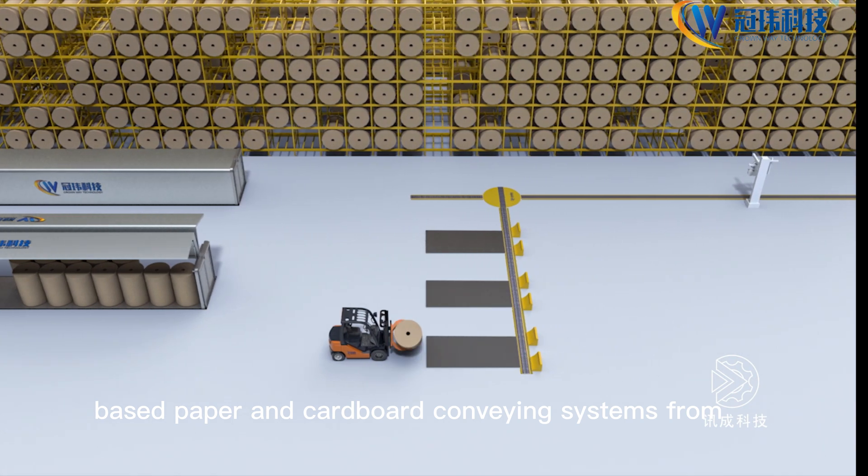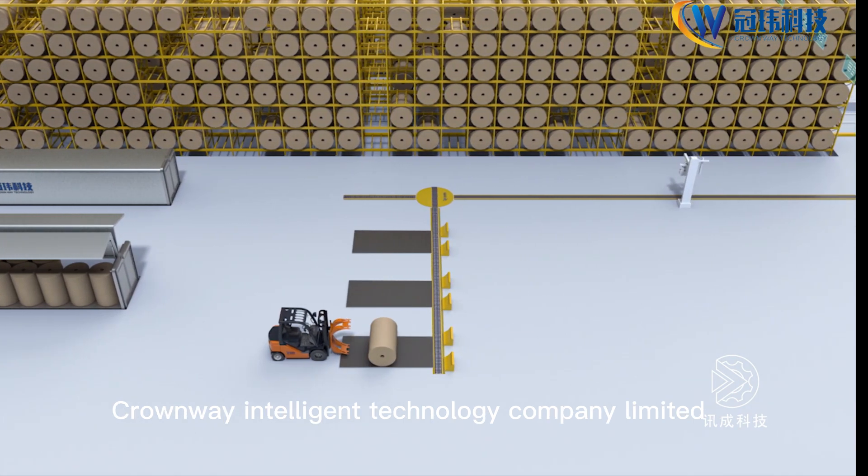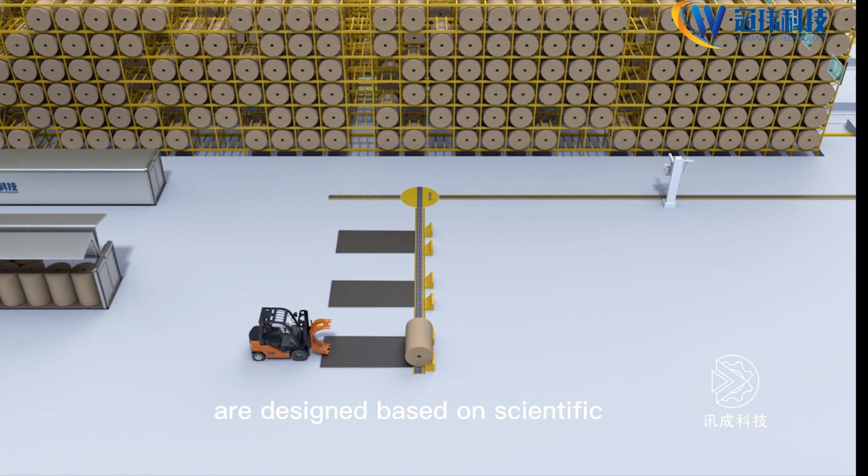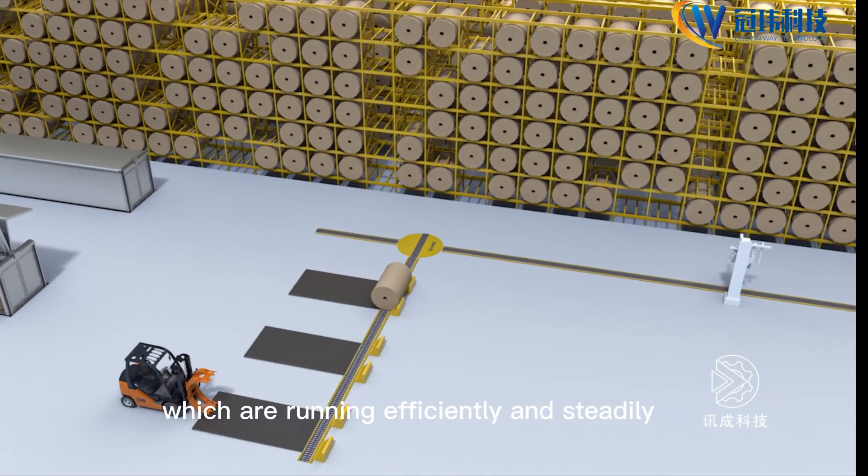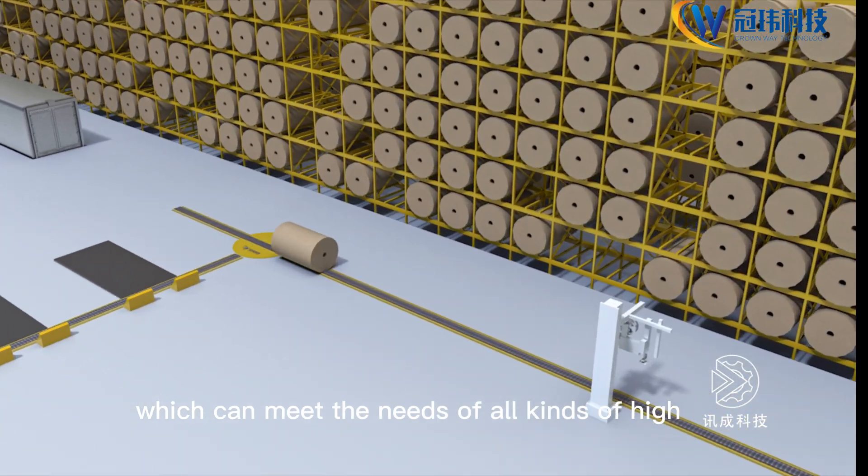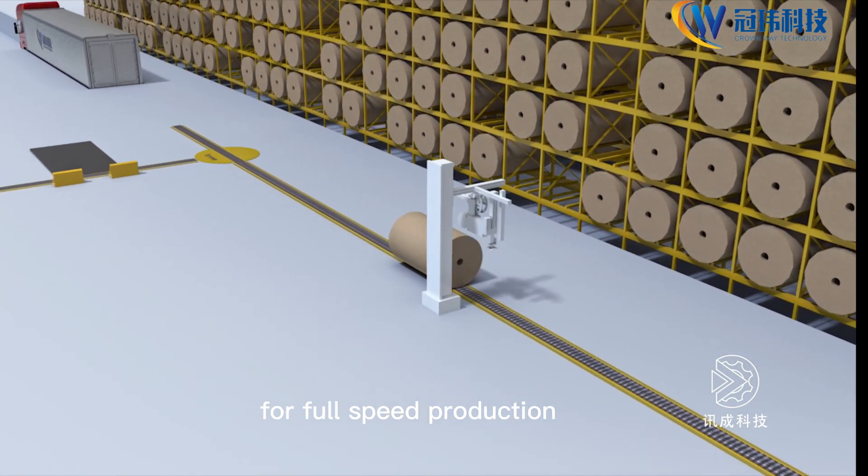Based paper and cardboard conveying systems from Groundway Intelligent Technology Company Limited are designed based on scientific principles which are running efficiently and steadily, which can meet the needs of all kinds of high-speed production lines for full-speed production.